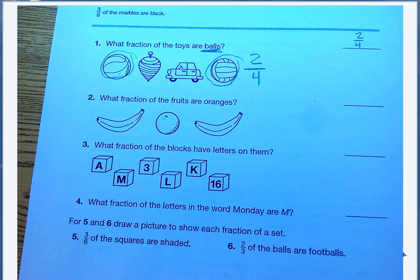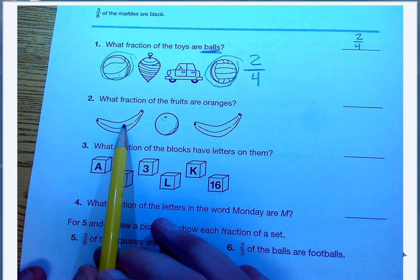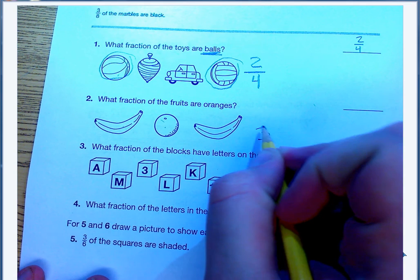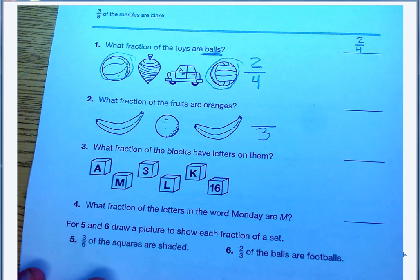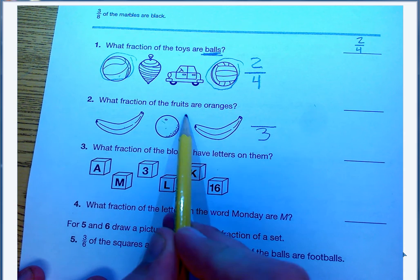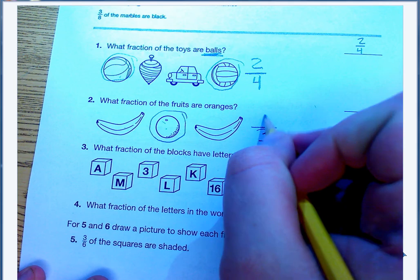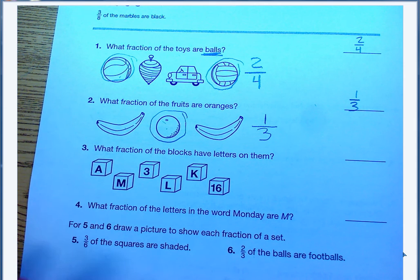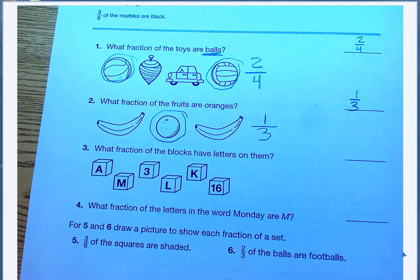Number 2 says, what fraction of the fruits are oranges? First thing I need to decide, how many fruits do I have? 1, 2, 3. I have 3 total fruits. And I need to decide how many are oranges. I have 1 that's an orange. So 1 out of my 3 fruits are oranges, or 1 third of my fruits are oranges.